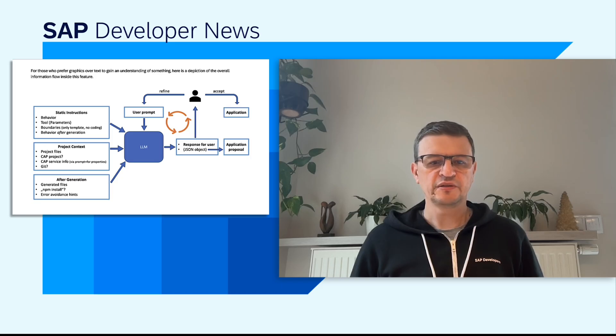Joule analyzes user requirements and gathers project details like folder structure, CAP services, and git state, then returns a hidden JSON configuration that drives deterministic template generation. After app creation, deterministic code takes over for tasks like dependency setup, while the LLM shifts into guidance mode. The key lesson for building AI developer tooling: combine LLM flexibility with precise tooling and strong context, and use deterministic code for everything predictable. Check out the full article on SAP Community.